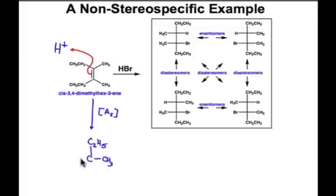So that sp2 carbon has been transformed into an sp3 stereocenter. We've also created at the other side of this carbon-carbon double bond our carbocation. And that carbocation is going to have the methyl and the ethyl group.